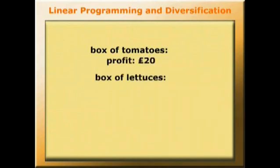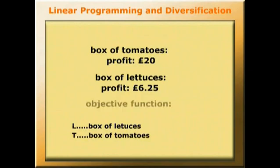From a box of lettuces £6.25, so the firm's profits will be the price of a box of lettuces multiplied by the number of boxes grown plus the price of a box of tomatoes multiplied by the number of boxes grown. If we call a box of lettuces L and a box of tomatoes T, the objective function is maximize 6.25L plus 20T.